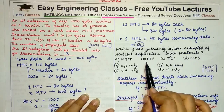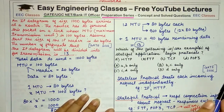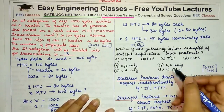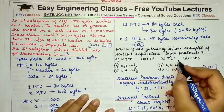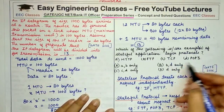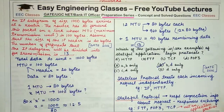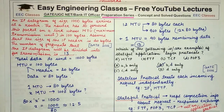FTP (File Transfer Protocol) and POP3 are both stateful protocols and also application layer protocols. Therefore the correct answer is B and D — FTP and POP3 are the protocols that are both application layer and stateful.